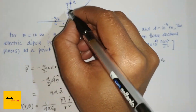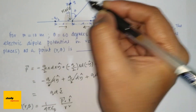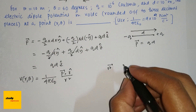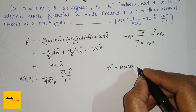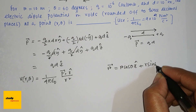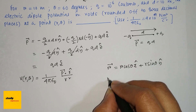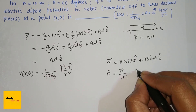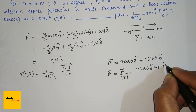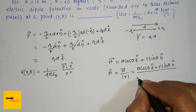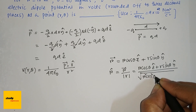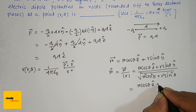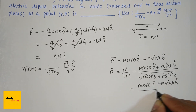Here, if this is r, then this is r cos theta in the z direction and r sin theta in the y direction. So the r vector is r cos theta z-cap plus r sin theta y-cap. And r-cap is r cos theta z-cap plus r sin theta y-cap, divided by r.